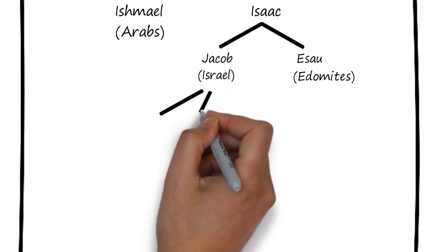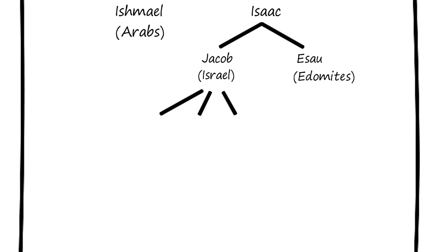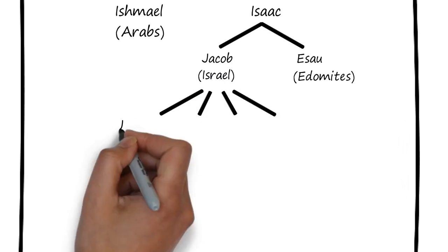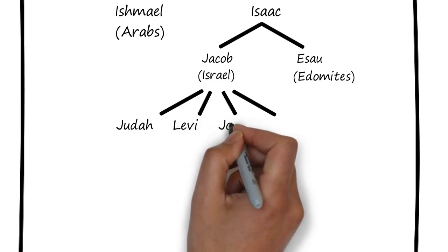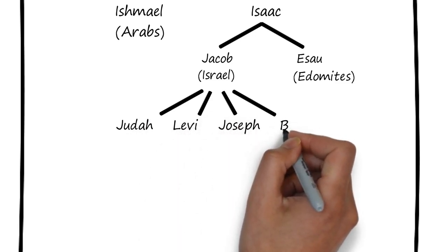Jacob had twelve sons, but we're only going to remember four: Judah, Levi, Joseph, and Benjamin.